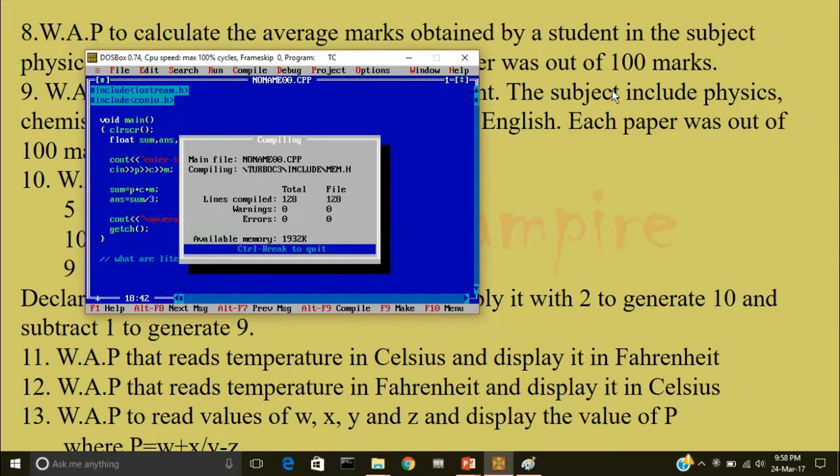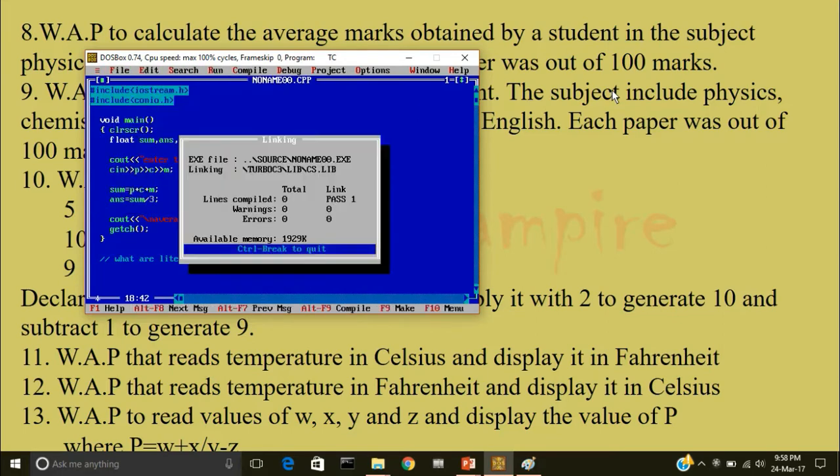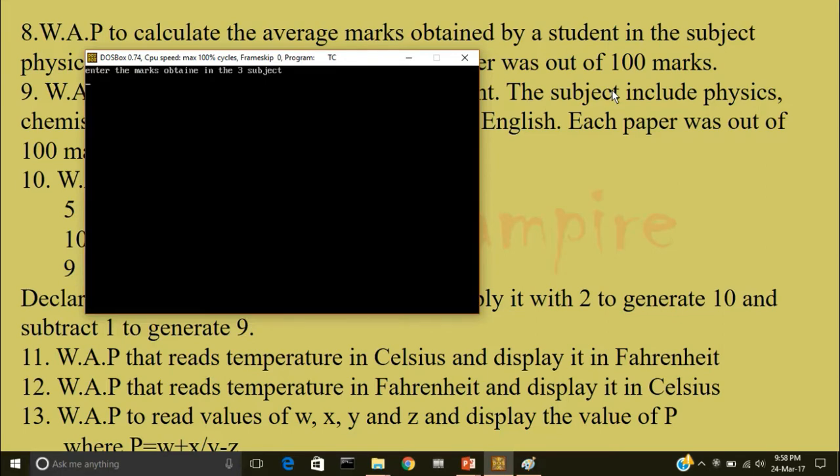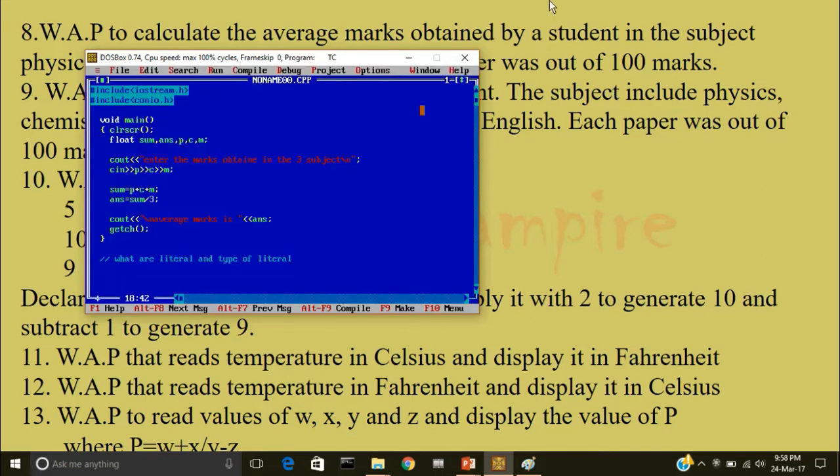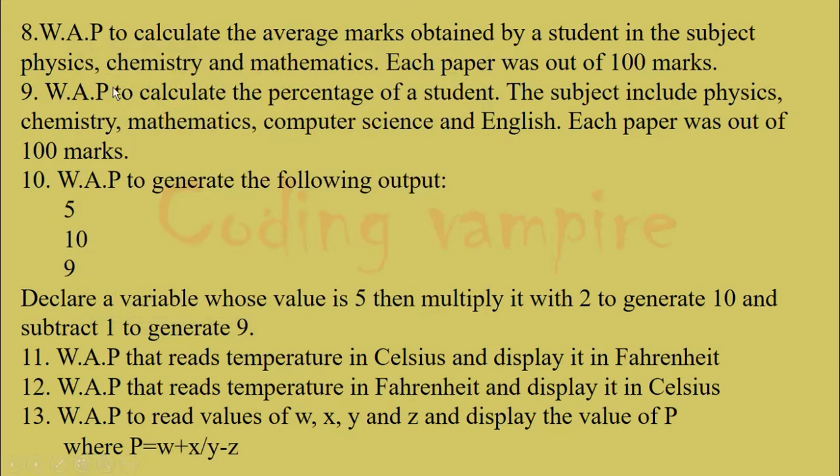Now I'll compile the program and I'll run it. Enter the marks obtained in 3 subjects, 78, 67, 88. So the average marks is 77.66664.